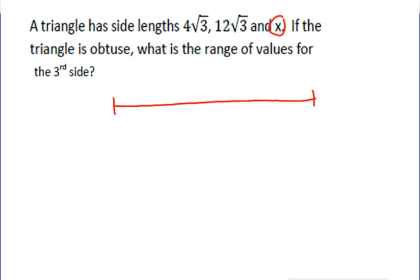And that comes from the triangle inequality, which would be if x is the biggest, then 4√3 plus 12√3 has to be less than x, and so the largest x could be is just below 16√3. It can't actually be 16√3. That would be what's called a degenerate triangle or a straight line.